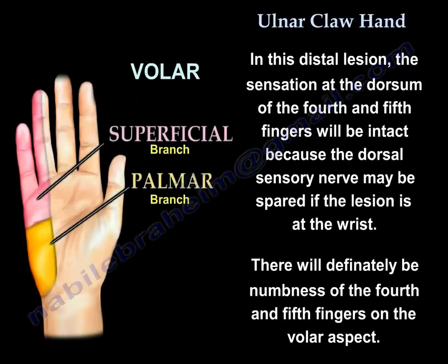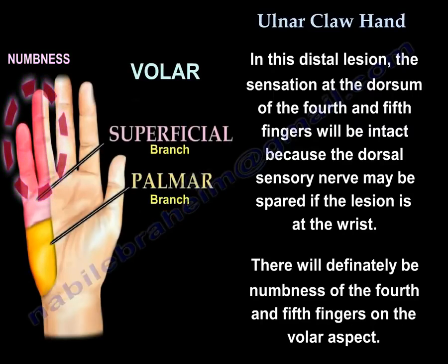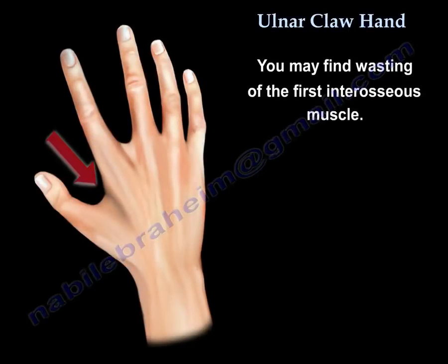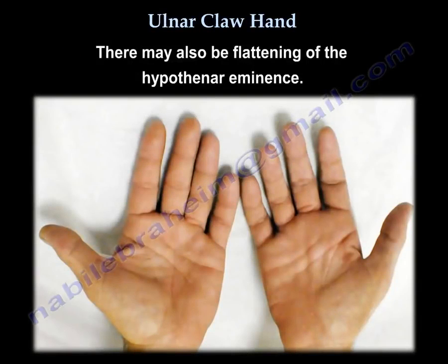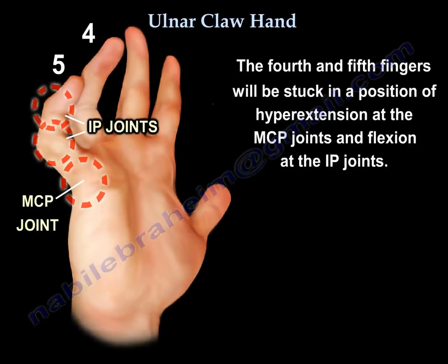You will definitely find numbness of the fourth and fifth fingers at the volar aspect. You may find wasting of the first interosseous muscle and flattening of the hypothenar eminence. The fourth and fifth fingers will be stuck in a position of hyperextension at the MCP joints and hyperflexion at the interphalangeal joints.